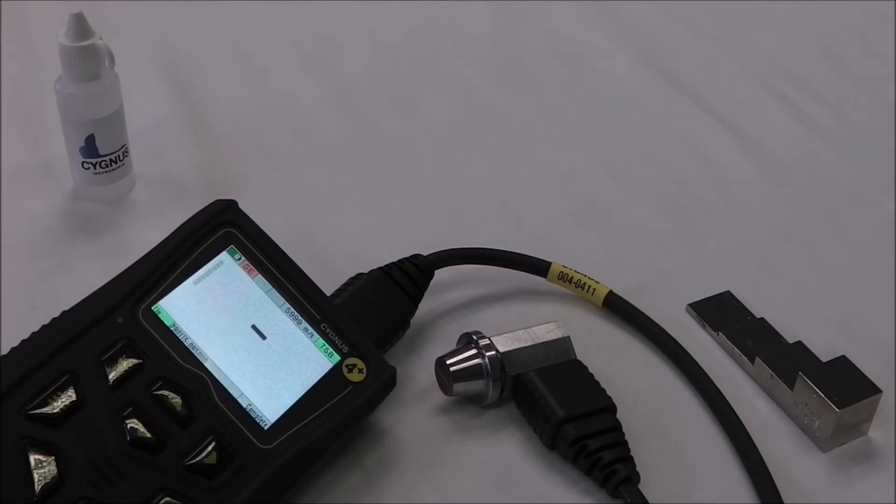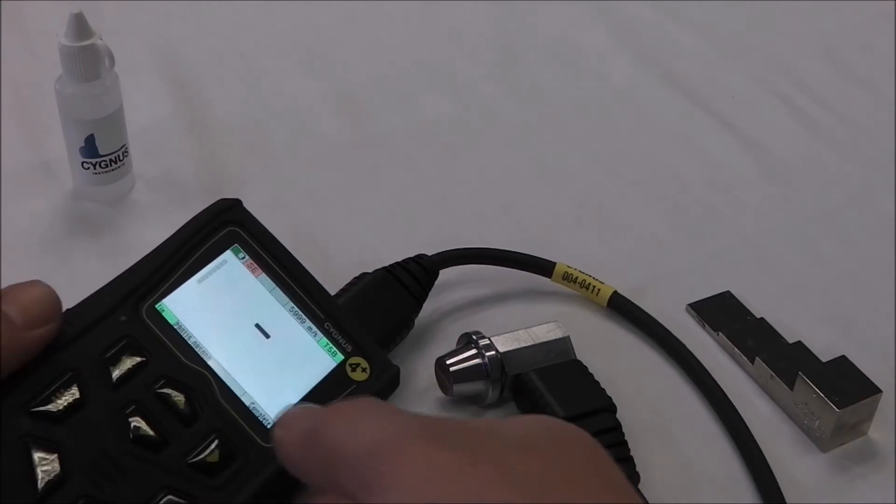We're using a T5B probe and a step block with four steps ranging from 2.5mm to 20mm. The two-point calibration should always be done using the thickest and the thinnest steps.